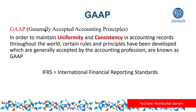Bismillah ar-Rahman ar-Rahim. GAAP, or Generally Accepted Accounting Principles. If you remember in the previous video, we discussed the quantitative and qualitative characteristics of accounting information — understandability, comparability, and so on. We said accounting information should have those qualities so we can compare data of one organization with another, and it should be understandable for everyone.